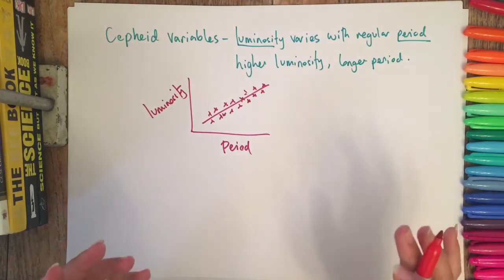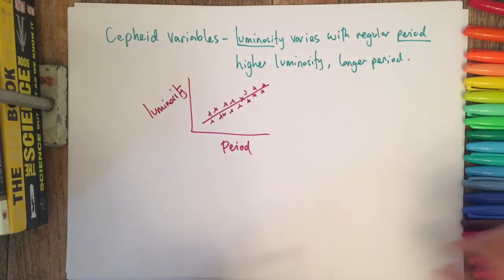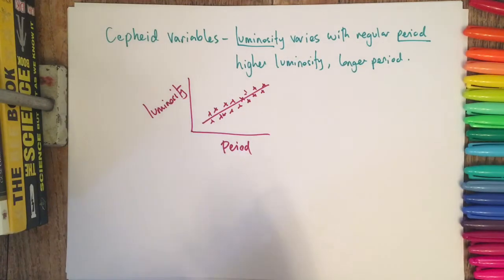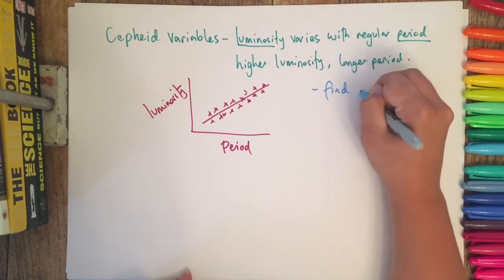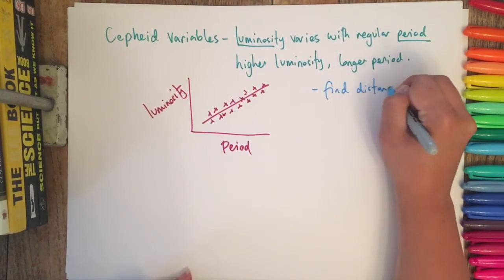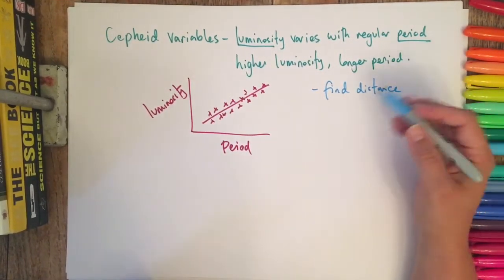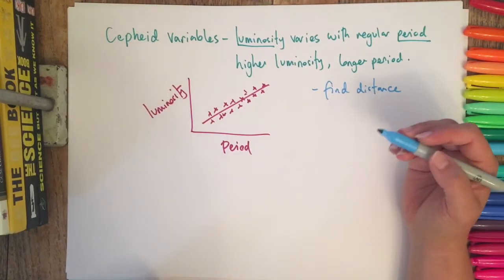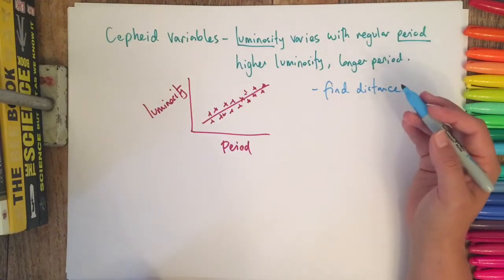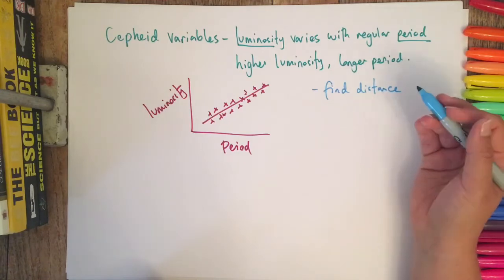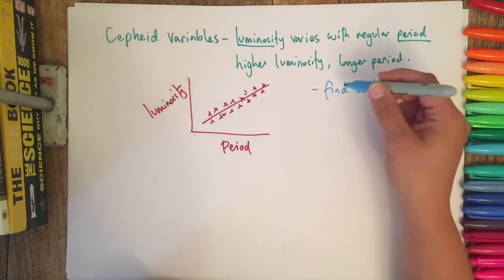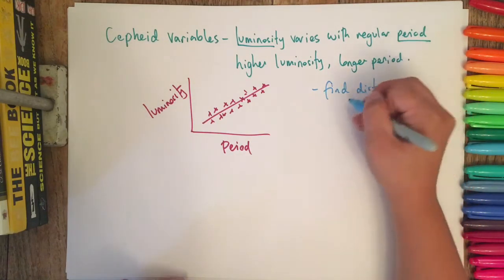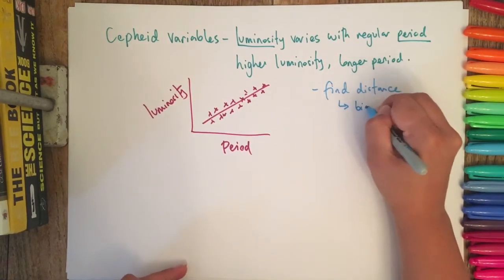They're used to find distances to an object. The other methods we use are parallax and comparing brightnesses of stars, but the good thing about this is that they can be used for bigger distances.